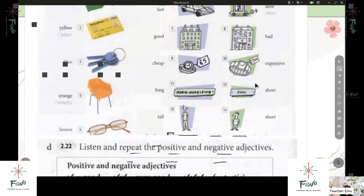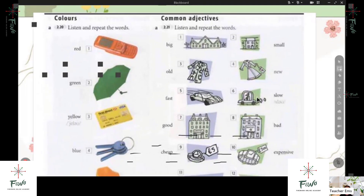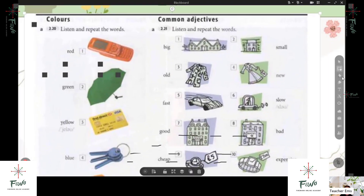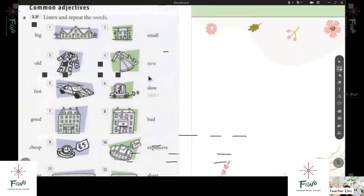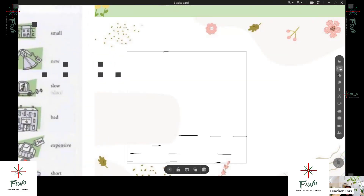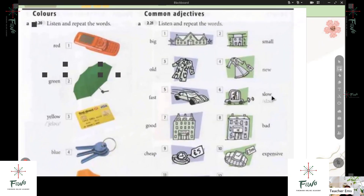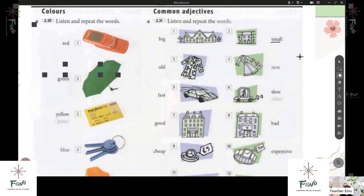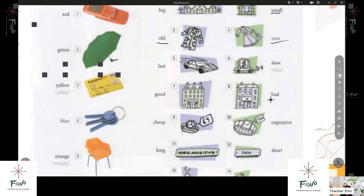Cheap — expensive. Long — short. Tall — short. Okay. So can you tell me if it's negative or positive? Big — positive. Small — negative. Old — negative. New — positive. All right, so you know already what is positive and negative in adjective words.